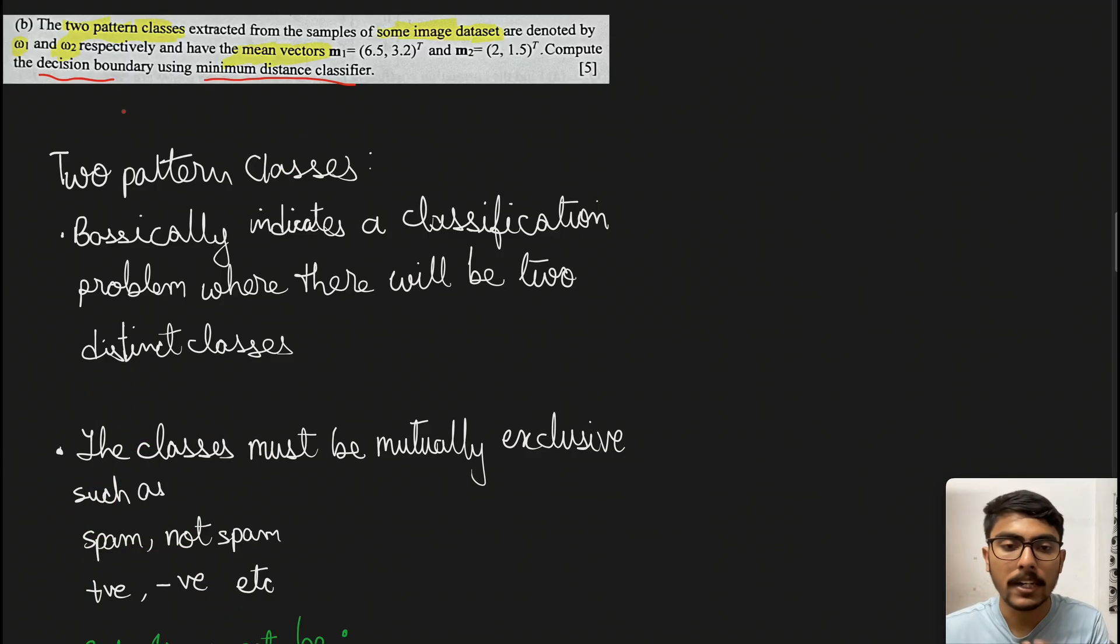First is two pattern classes. Pattern classes here denotes pattern vectors. When images are stored in computers, they're stored in number format - not colors but numbers. For each pixel there's an array of numbers denoting its particular color, RGB values. Similarly, there are vectors for position that denote the pixel's position - these are pattern vectors.